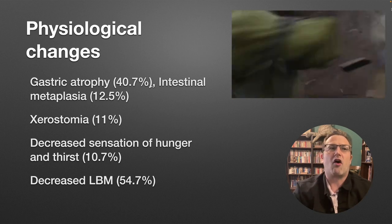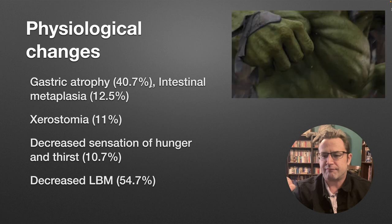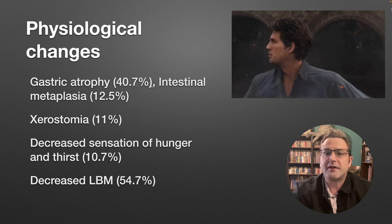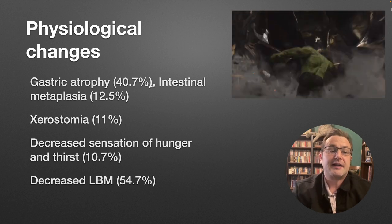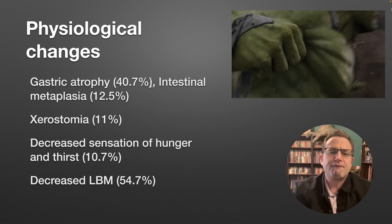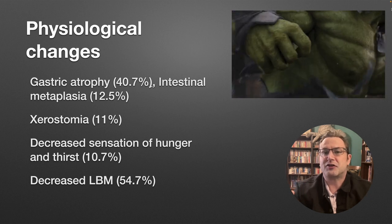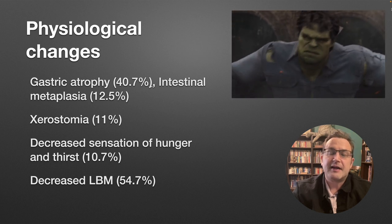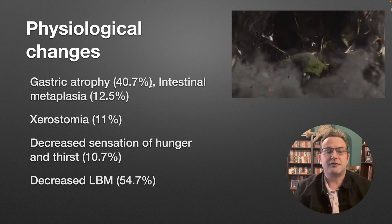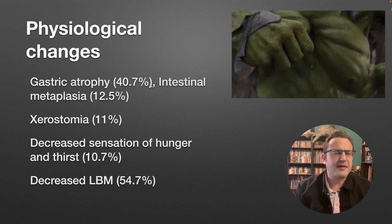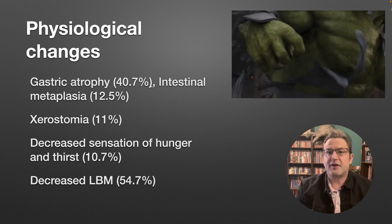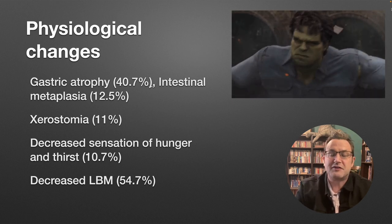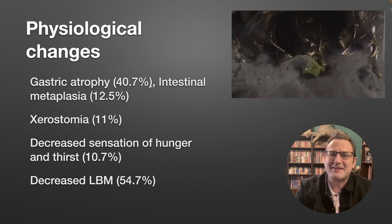The elderly are also more at risk due to physiological changes. About 41% of gerontological patients exhibit gastric atrophy, 12.5% intestinal metaplasia, 11% present with xerostomia, almost 11% present with decreased sensations of hunger and thirst, and a whopping almost 55% present with some decreased lean body mass.